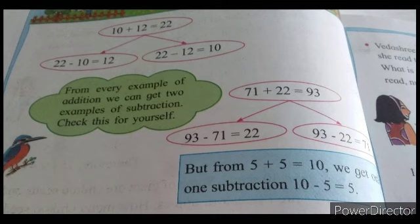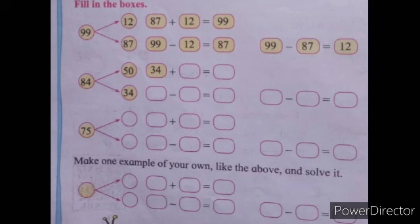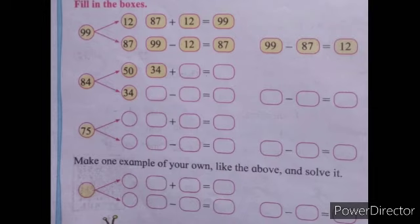Now see the next example — fill in the boxes. Three numbers are given: 99, 12, and 87. We have to make the addition example and subtraction examples. So: 87 plus 12, the answer is 99. That is one addition example. Now for subtraction, the bigger number is 99. So: 99 minus 12, the answer is the remaining number, 87. Next: 99 minus 87, the answer is 12.